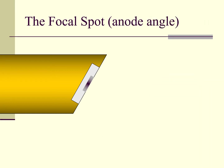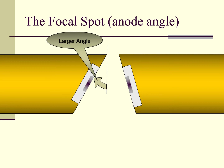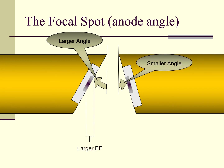This idea that anode angle controls the effective size may be hard to grasp, so here is an example. Here we have two anodes that are identical except for one important feature — their anode faces are set at different angles. The anode on the left is a large angle, about 30 degrees, and the anode on the right is cut at a smaller or steeper angle, about 16 degrees. When we project the effective focal spot on the left anode, we notice it is large. The projected focal spot on the right anode is markedly smaller, by about a third.